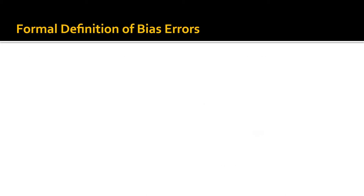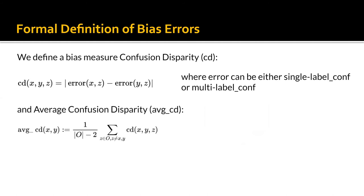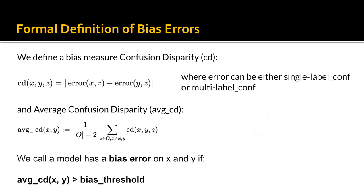For the formal definition, we define confusion disparity for three classes X, Y, Z as the difference of the error between class X and Z and the error between Y and Z, where the error can be either single-label confusion or multi-label confusion. We also define an aggregative value called average confusion disparity, which is the average of confusion disparity between X, Y, and each of the other class Z. We call a model has a bias error if this value is larger than a specified threshold.